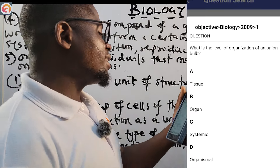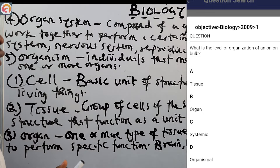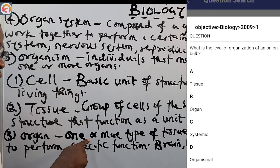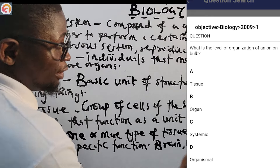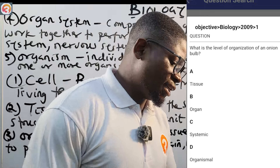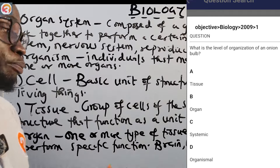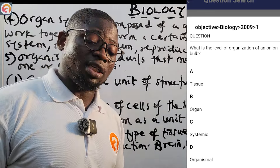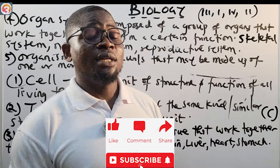Finally, 2009 number one asks: what is the level of organization of an onion bulb? We listed the onion bulb as a plant organ earlier. An organ is one or more types of tissue that work together to perform a specific function. So the correct answer is option B: the organ level. Please stay diligent in your studies, keep reading, do not relent — we'll see you at the top. Thank you for watching.